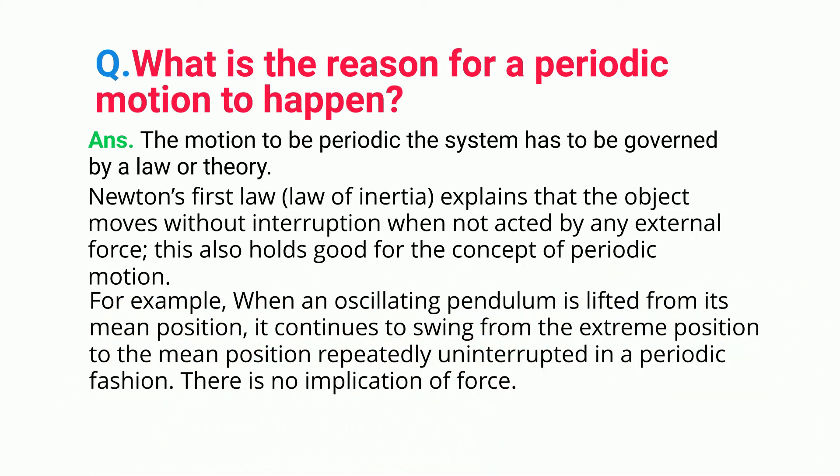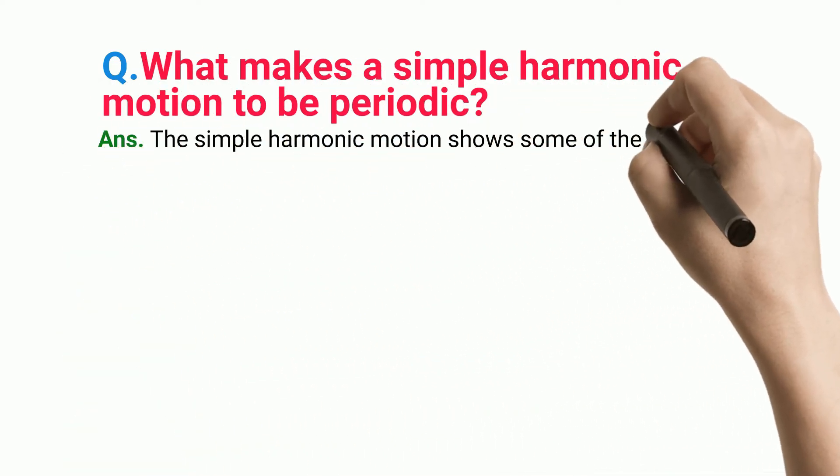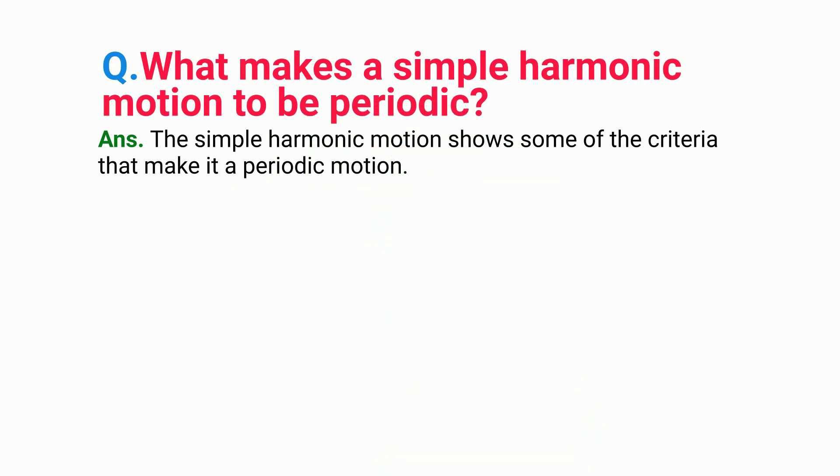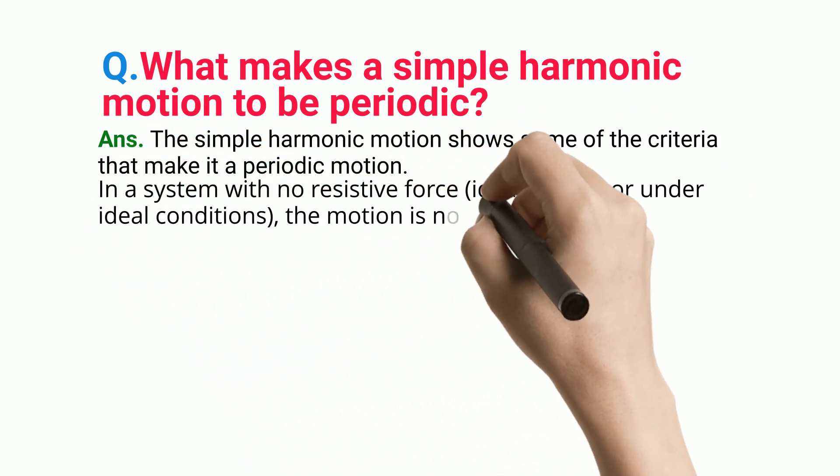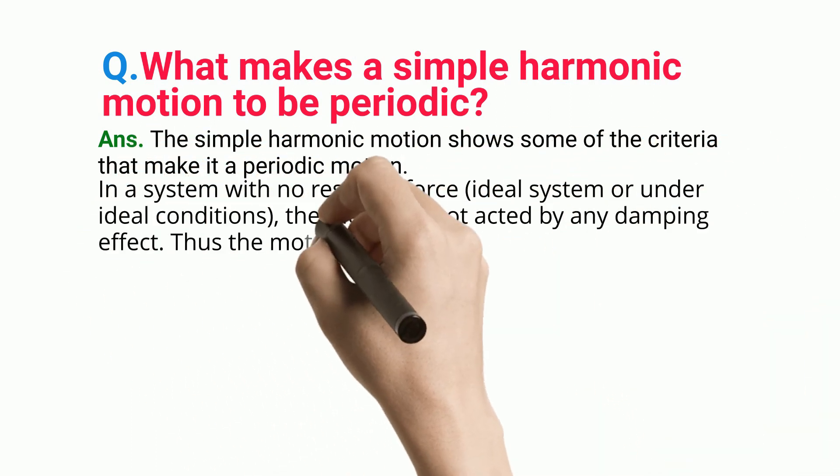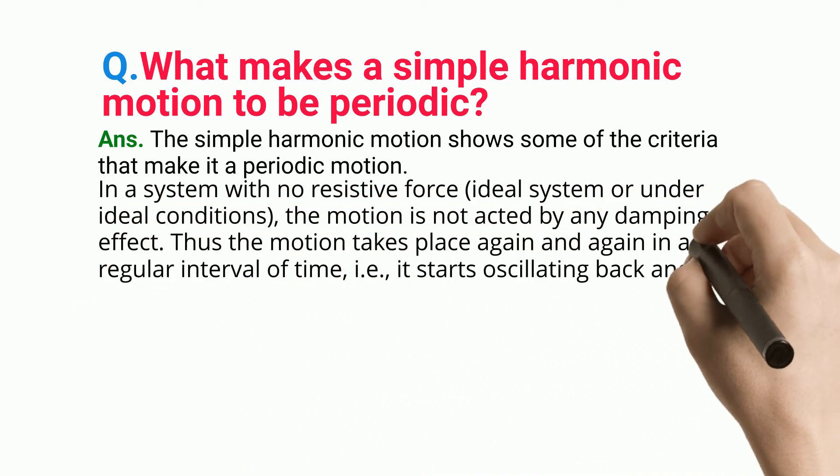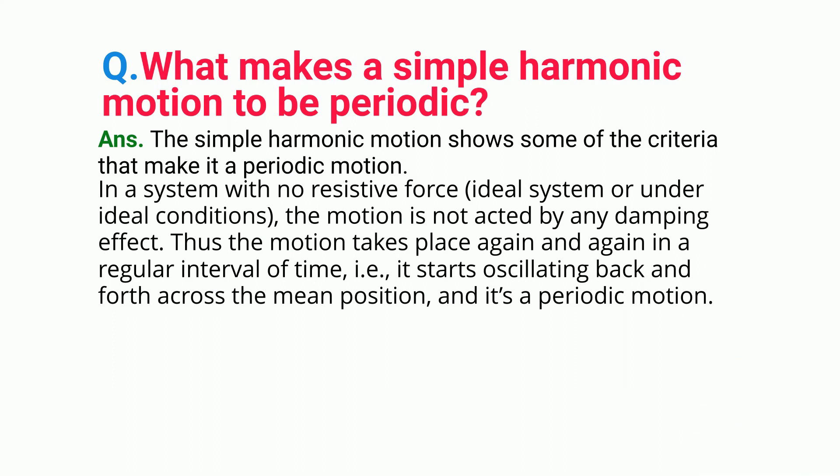What makes a simple harmonic motion to be periodic? The simple harmonic motion shows some of the criteria that make it a periodic motion. In a system with no resistive force (ideal system or under ideal conditions), the motion is not acted by any damping effect. Thus the motion takes place again and again in regular intervals of time, i.e., it starts oscillating back and forth across the mean position and it's a periodic motion.